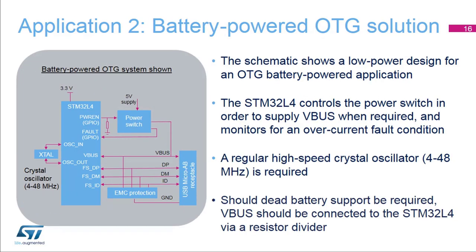Here is a second application example showing a battery-powered OTG solution. The STM32L4 controls a power switch supplying VBUS to the receptacle and monitors for faults on the supply. In this example, a regular crystal oscillator should be used. Should dead battery support be required, VBUS should be connected to the STM32L4 via a resistor divider.